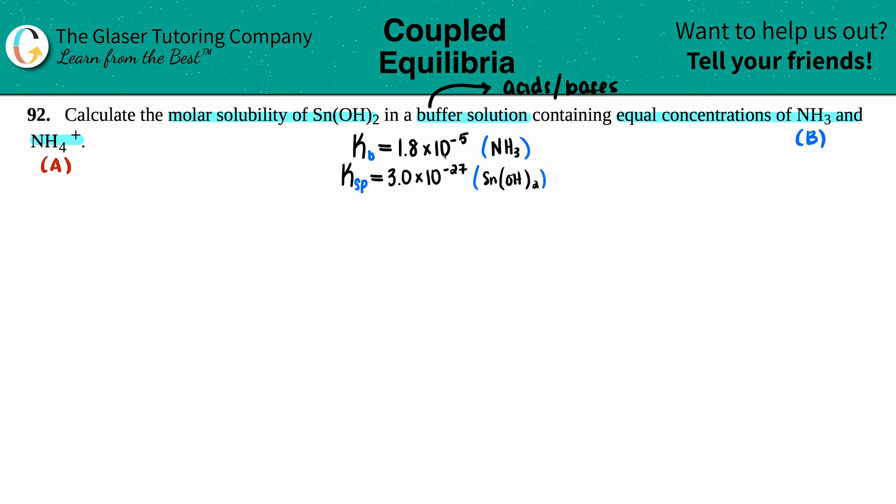Let's first write out the two equations that go together with these K values. Let's start off with the Kb. If you have a Kb value, that means you're starting off with the base and making your conjugate acid.